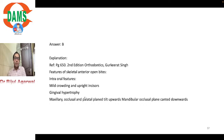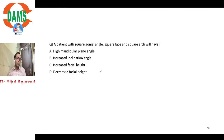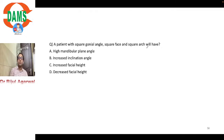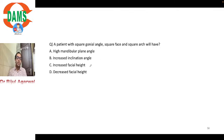A patient with square gonial angle, square face, and square arch will have: high mandibular plane angle, increased inclination angle, increased facial height, or decreased facial height? These features are classic Class 2 Division 2. High mandibular plane angle causes vertical growth and increased facial height. Inclination angle relates to the palatal plane relative to cranial base — not a feature of Class 2 Div 2. The correct answer is decreased facial height.